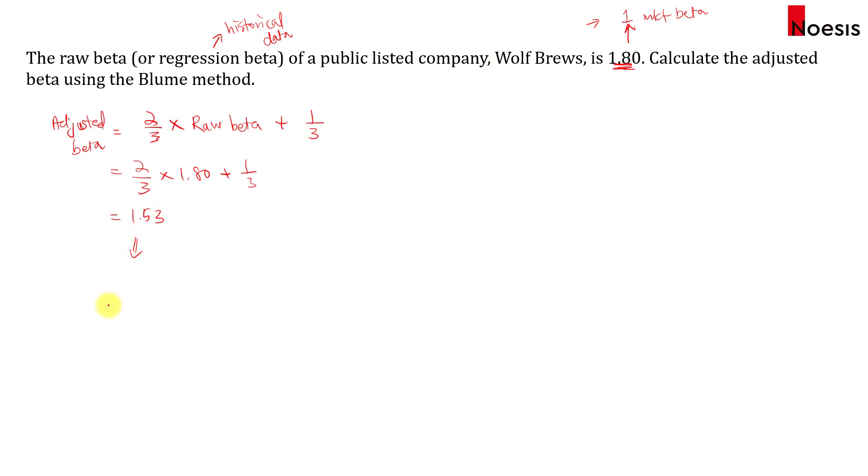So once we get the beta, we can of course use this to calculate the cost of equity. For example, using the CAPM formula, we can use this beta for calculating cost of equity. So if you keep applying this, the beta will slowly decline back to 1.